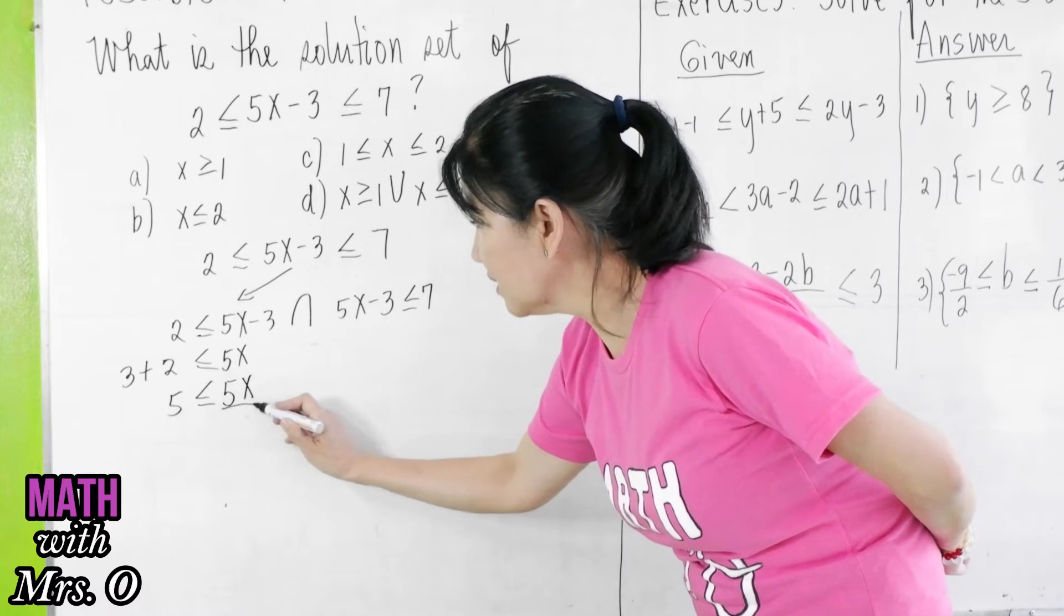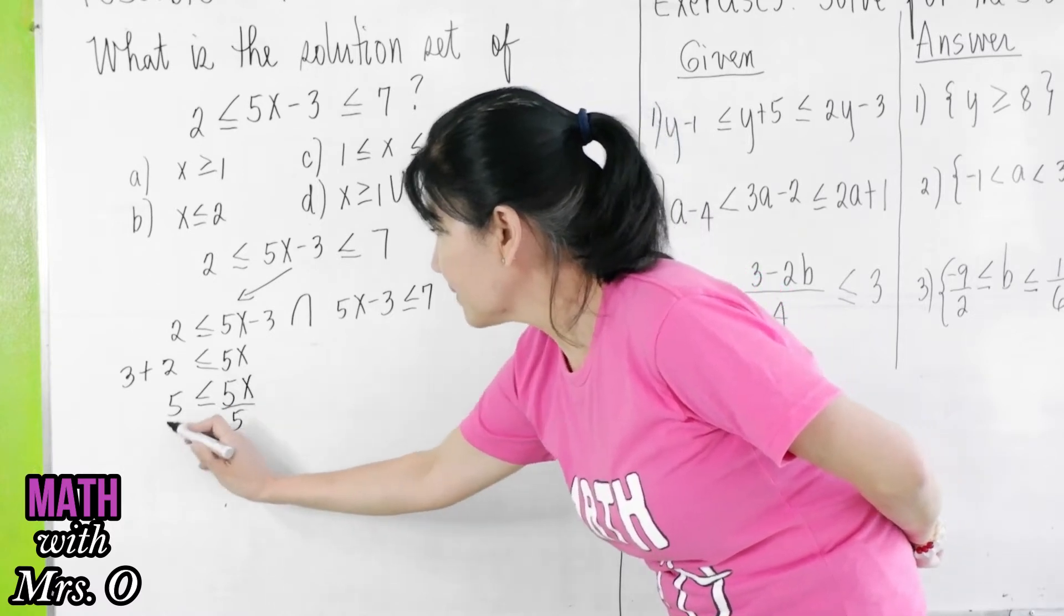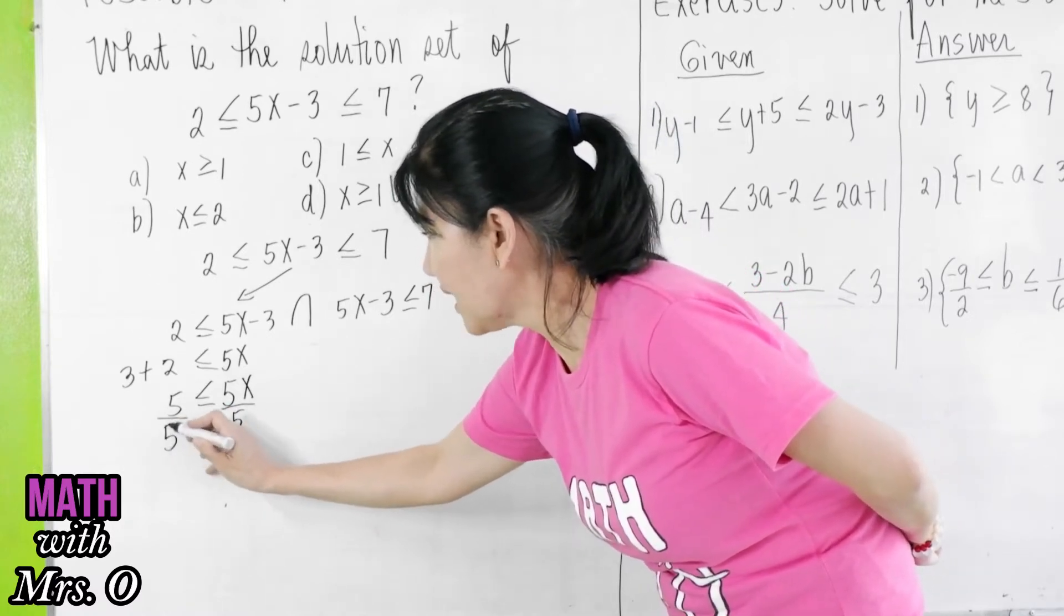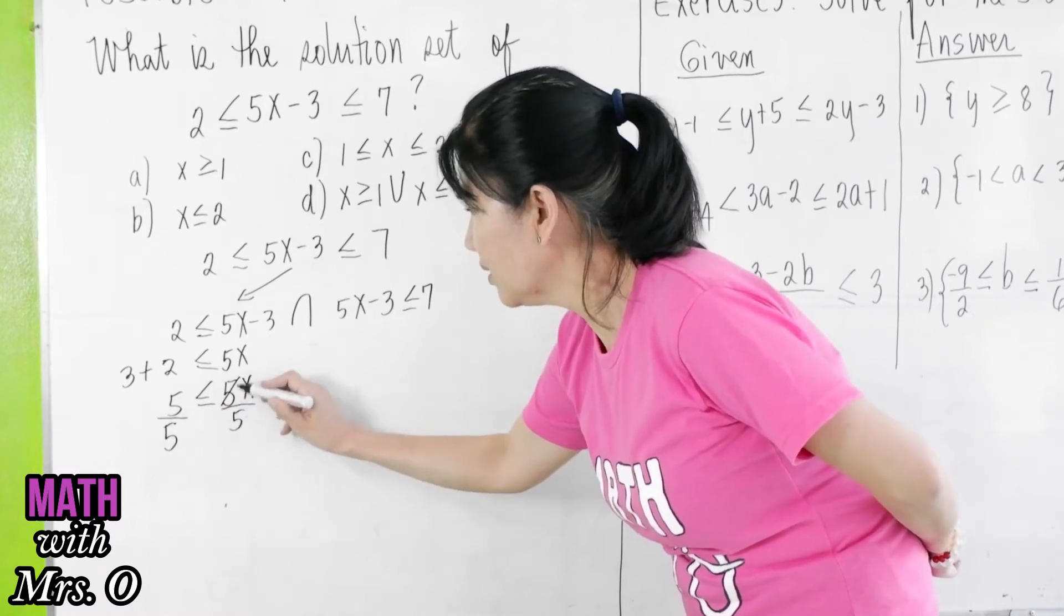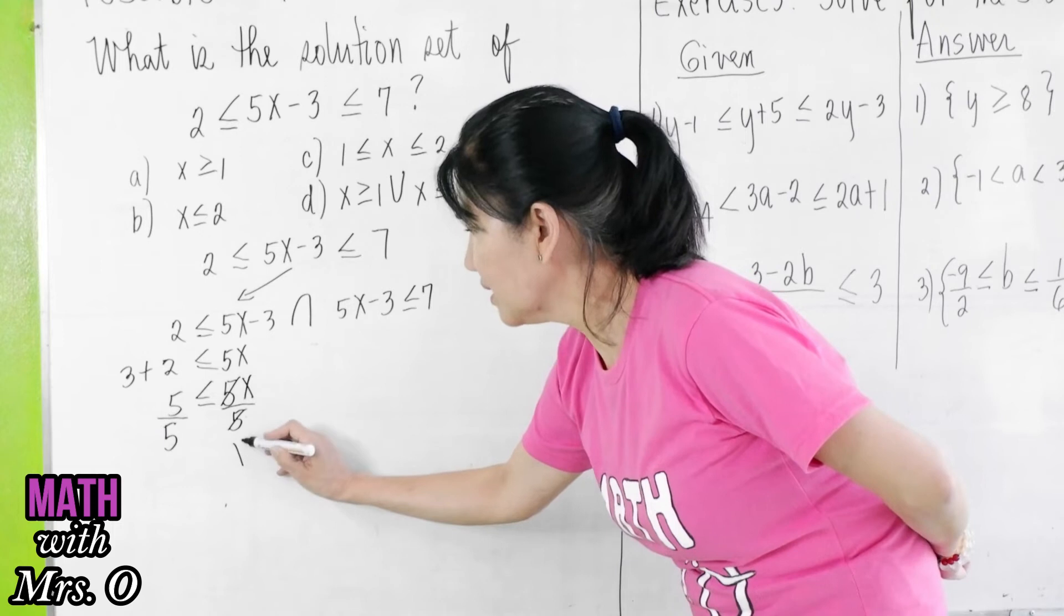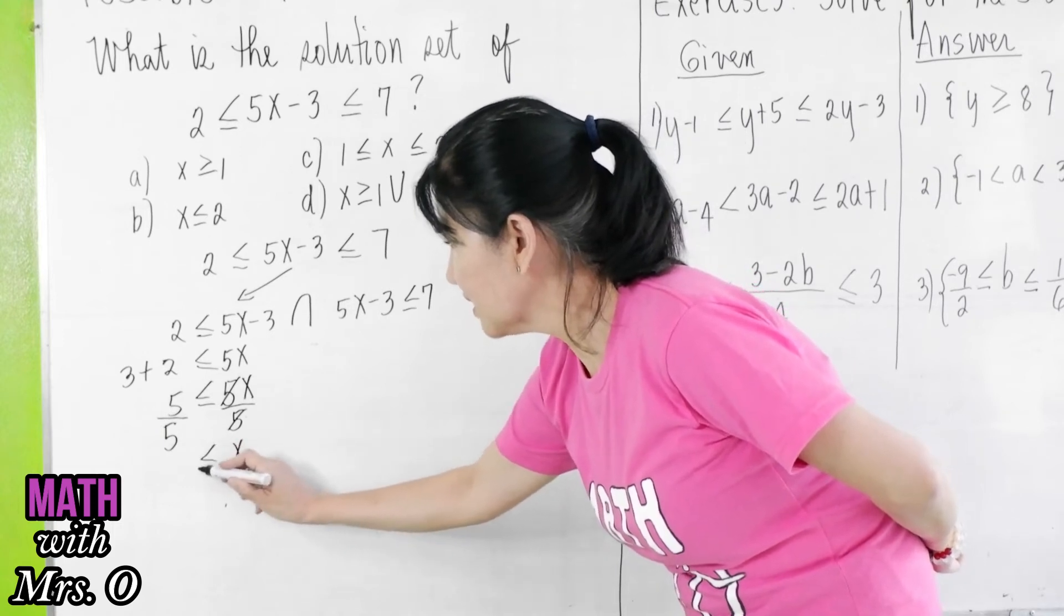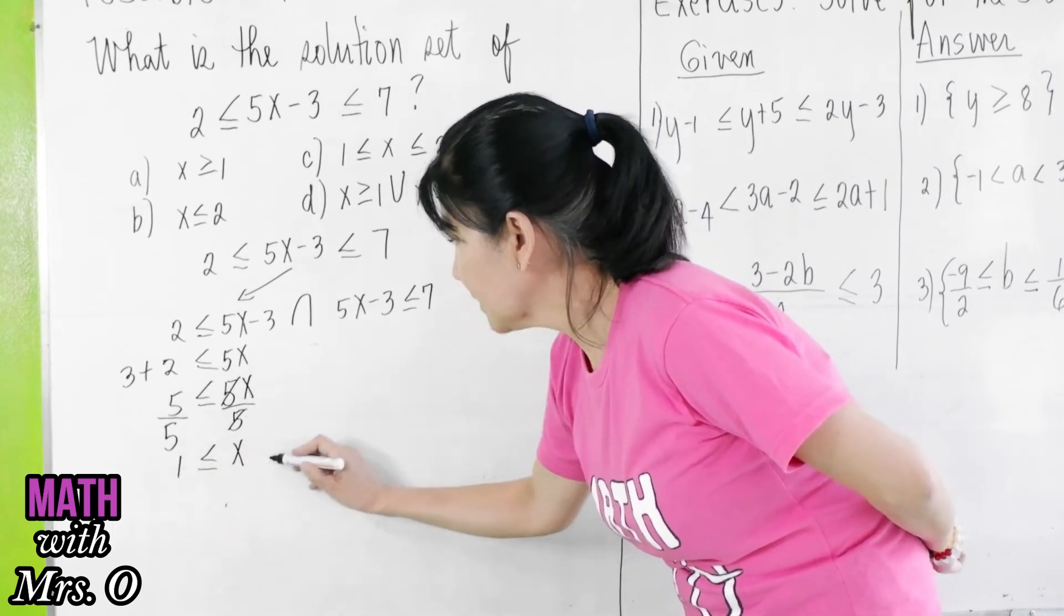To isolate x, divide this by 5, and also divide this by 5. Both sides, in other words, divided by 5, you cancel 5. You're left with x is greater than or equal to 1.